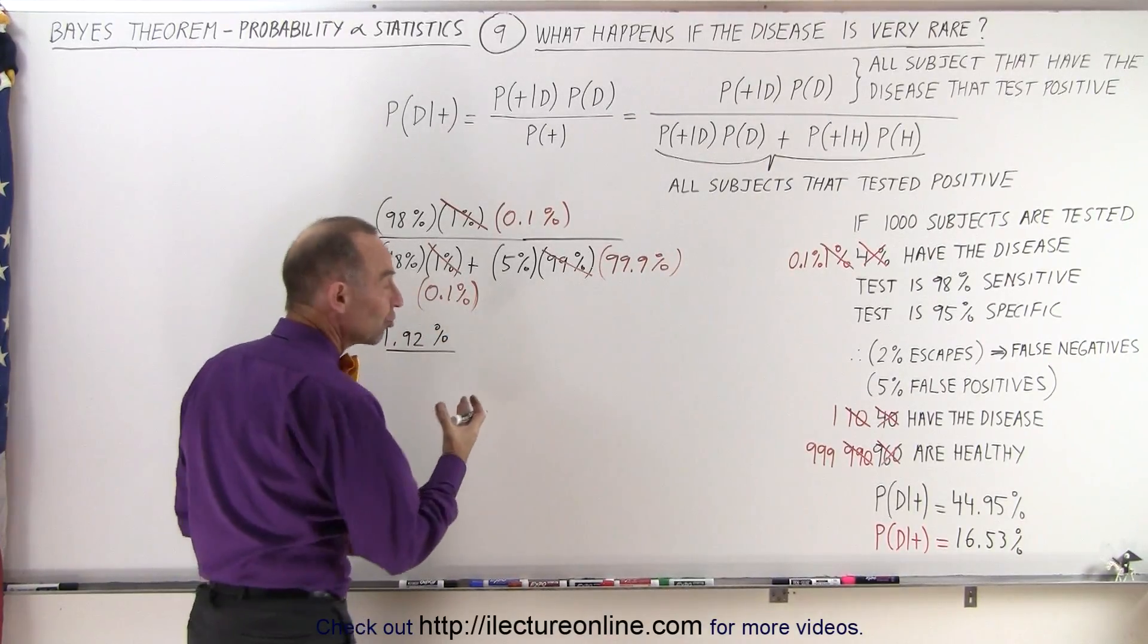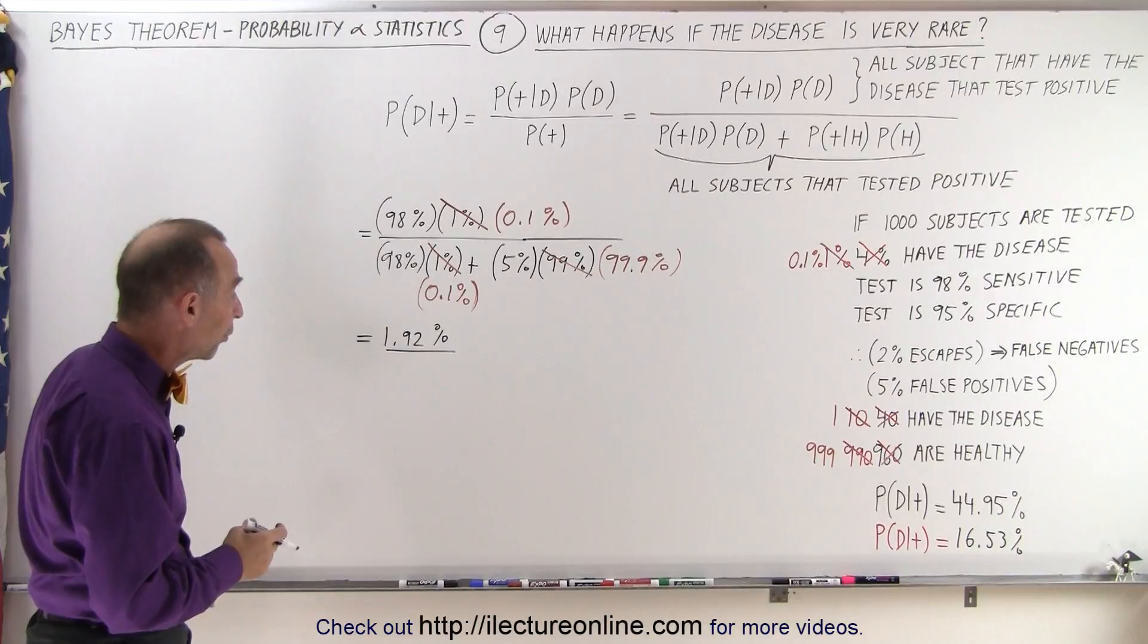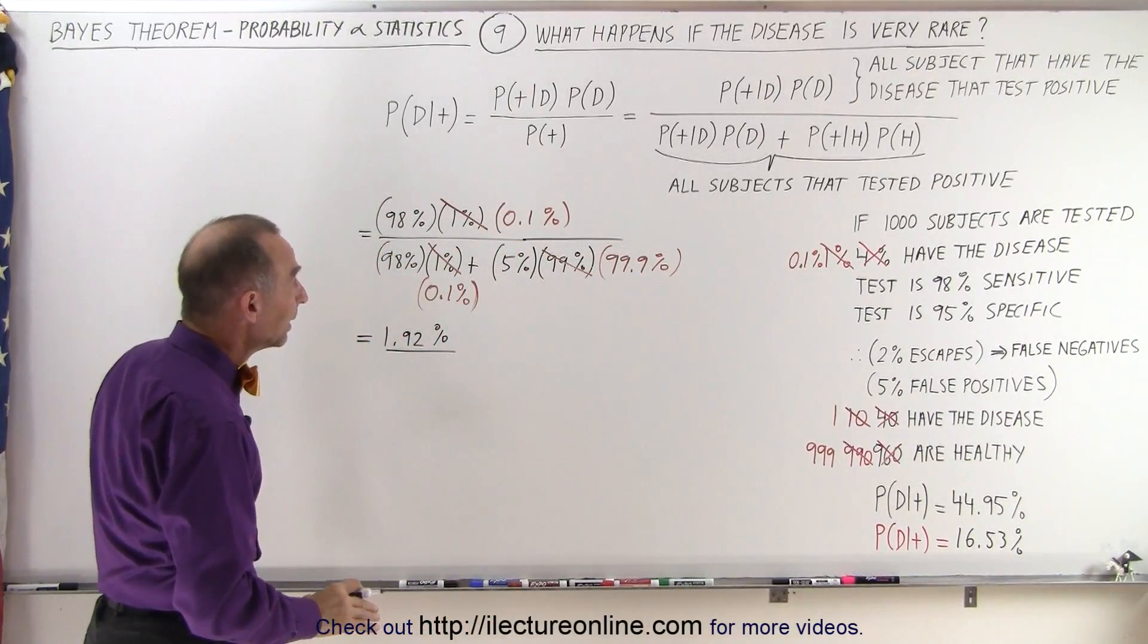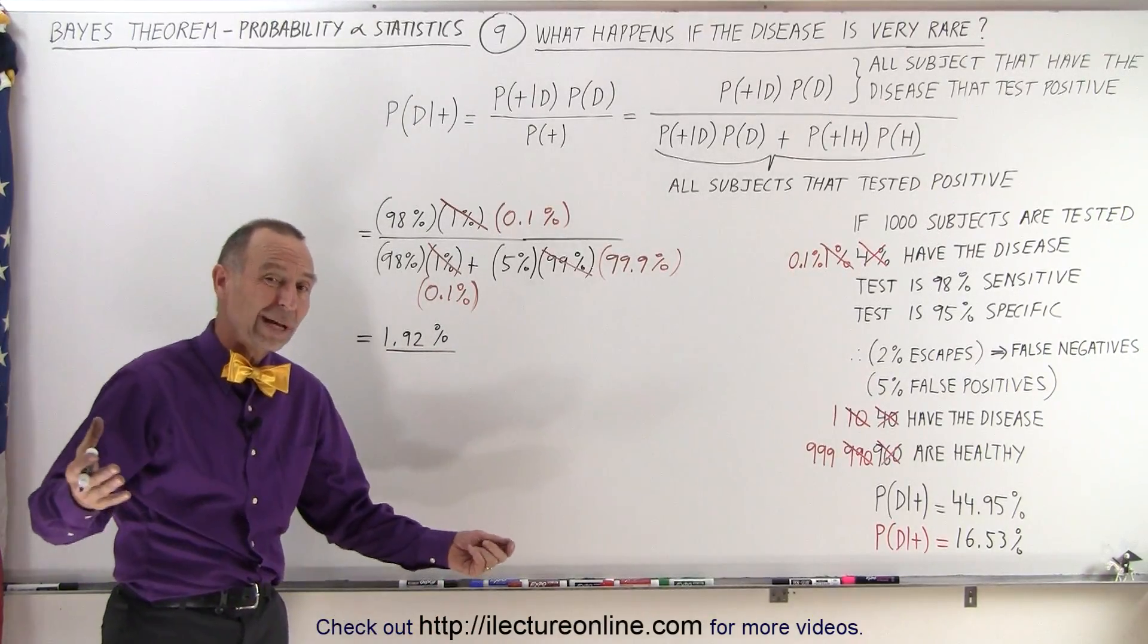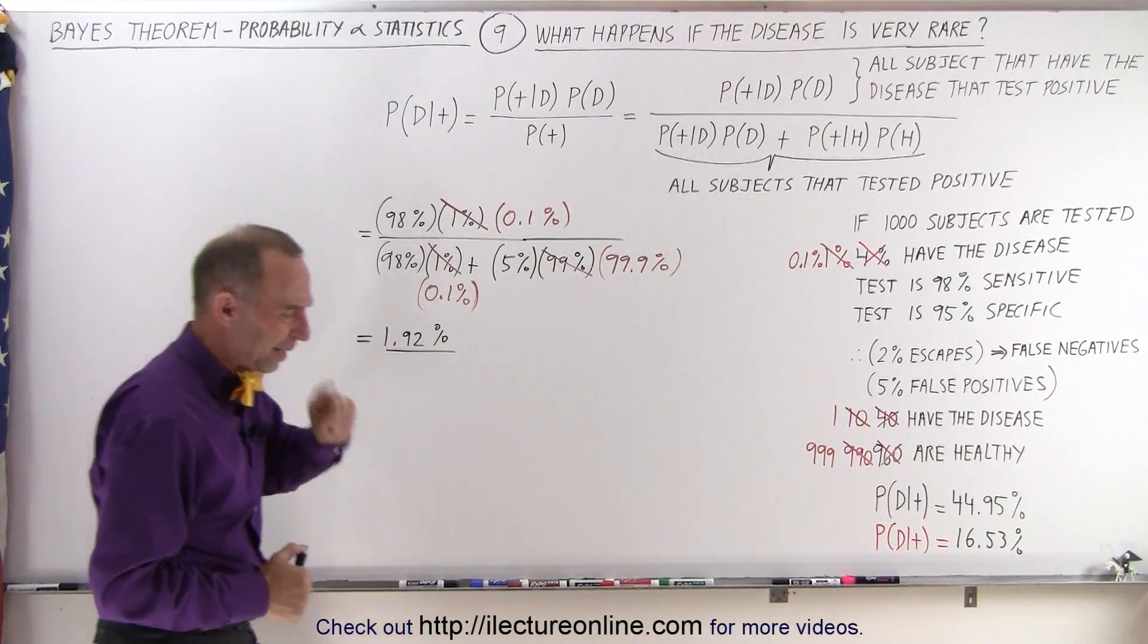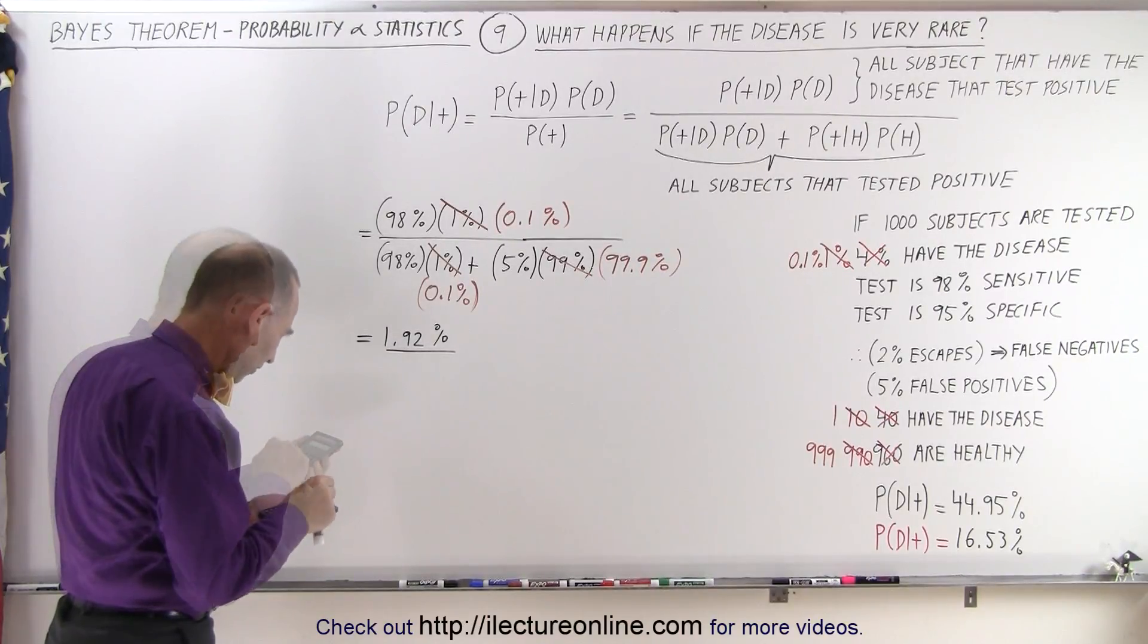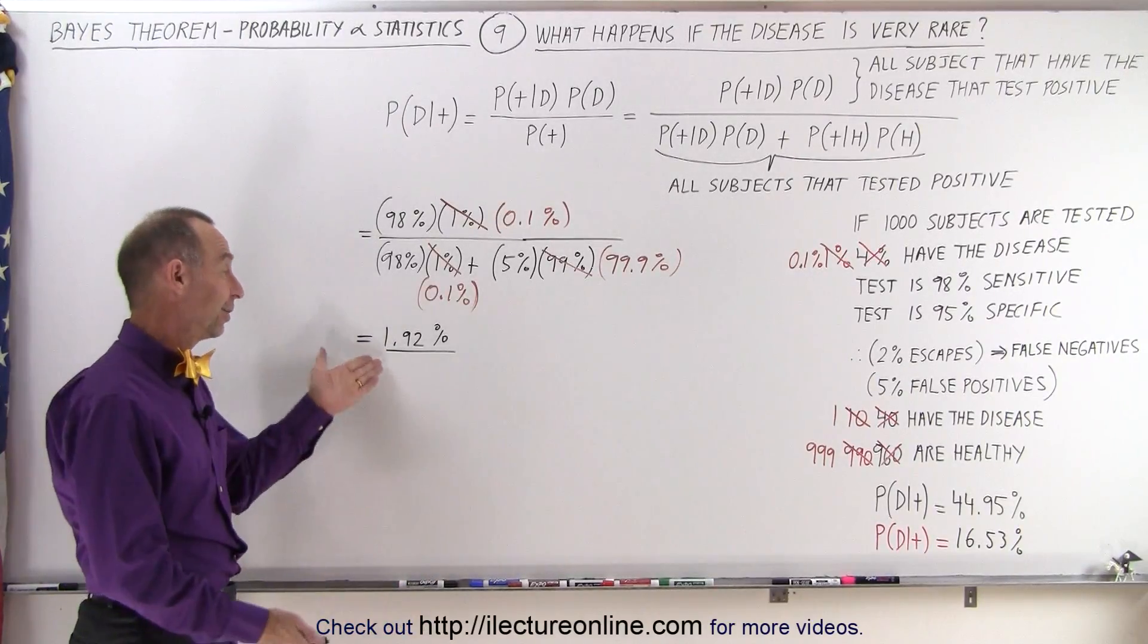Wow, that's an enormous drop. So now, if there's only an occurrence of one in a thousand that have this particular condition that you're testing for, and the test has some pretty good ratings, 98% sensitive, 95% specific, not the best but not bad. Then you'd say if someone tests positive, you're only 1.92% probability that the person actually has the condition you're testing for. But I want to check this one more time just to make sure I didn't make a mistake. Sure enough, 1.92. Did not make a mistake.